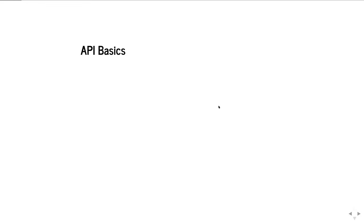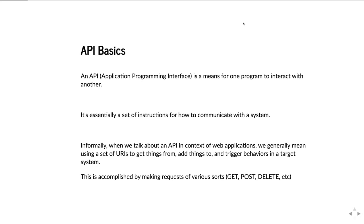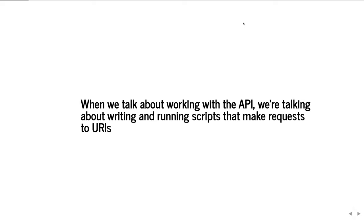I want to talk about some API basics. An API is an application programming interface — a means for one program to interact with another program. It's essentially a set of instructions for how you communicate with a system. Informally, when talking about an API in the context of web applications like ArchivesSpace, we mean using a set of URIs to get things from, add things to, and trigger behaviors in a target system. This is accomplished by making HTTP requests of various sorts to the application. When we talk about working with the API, we're talking about writing and running scripts that make requests to these URIs.